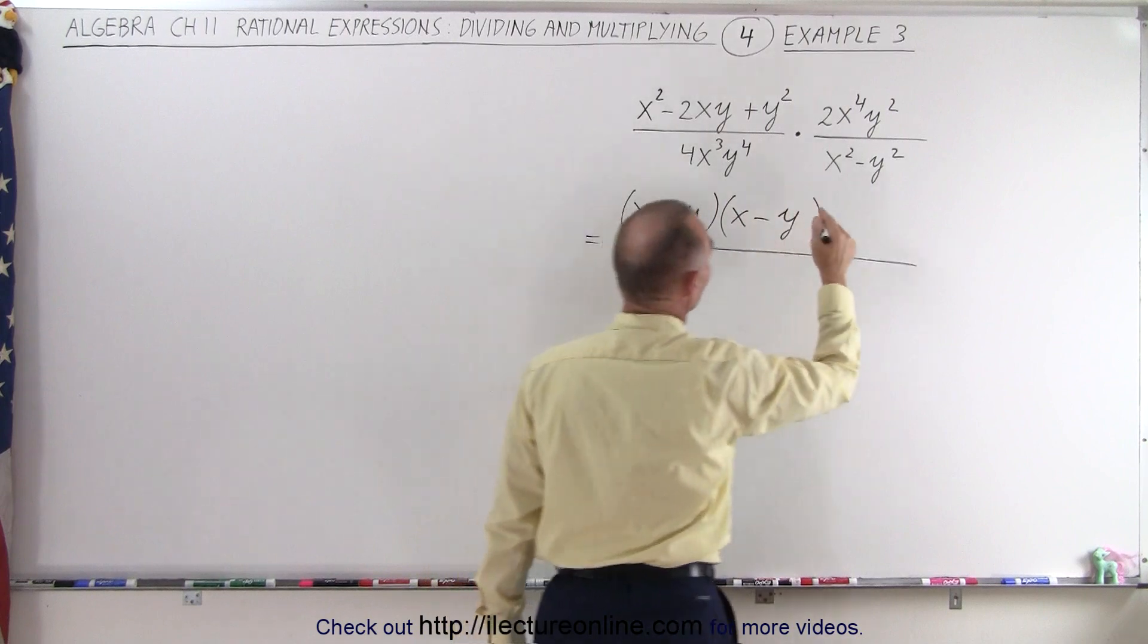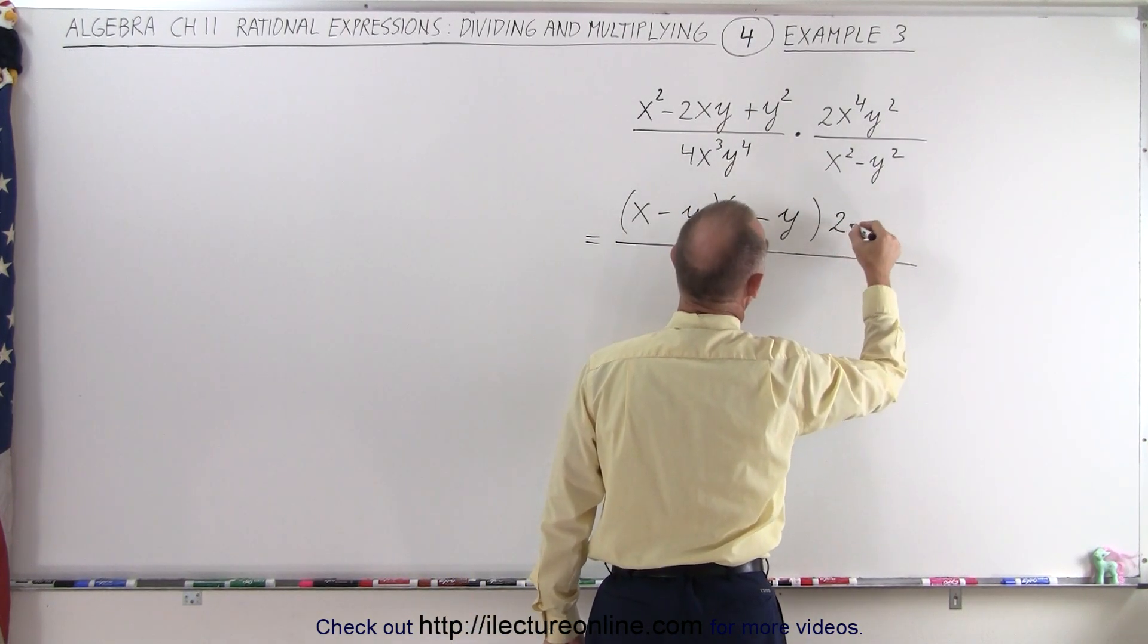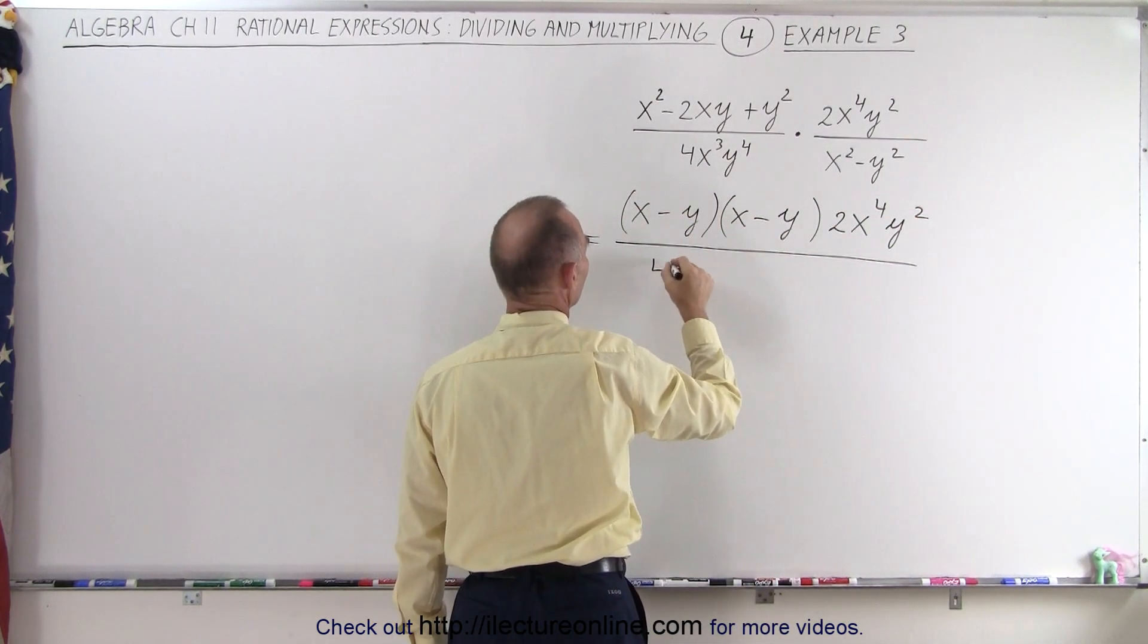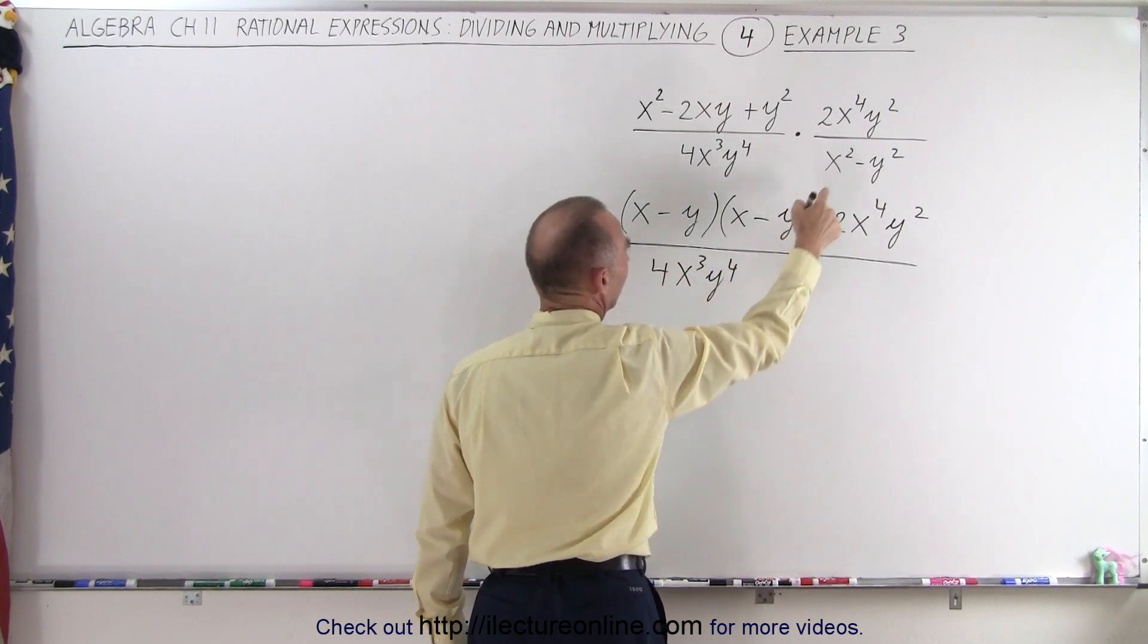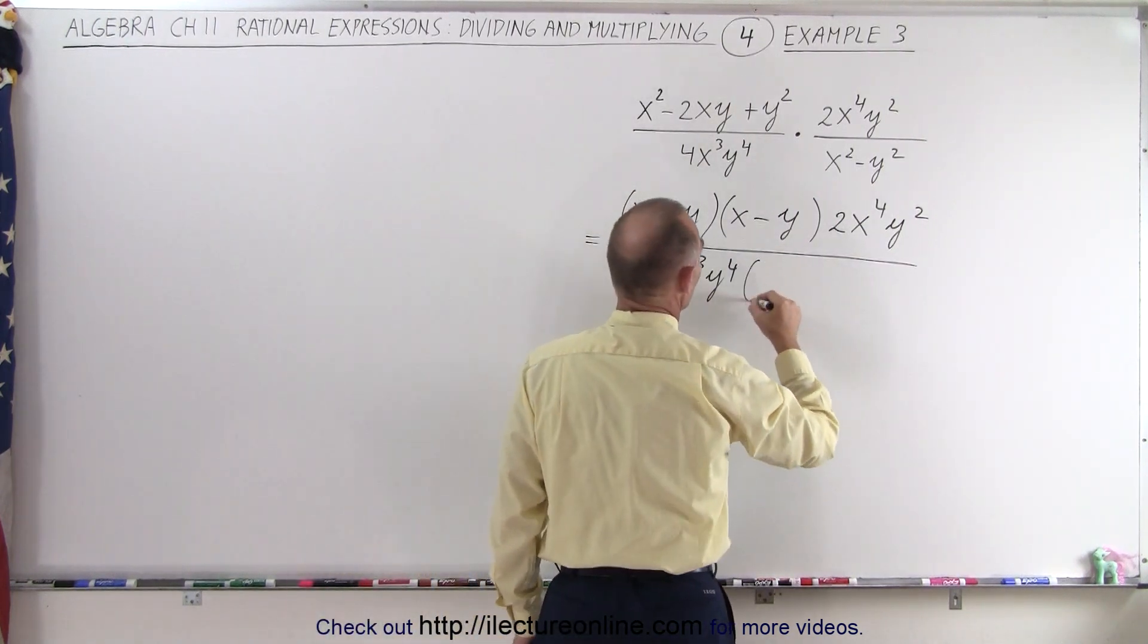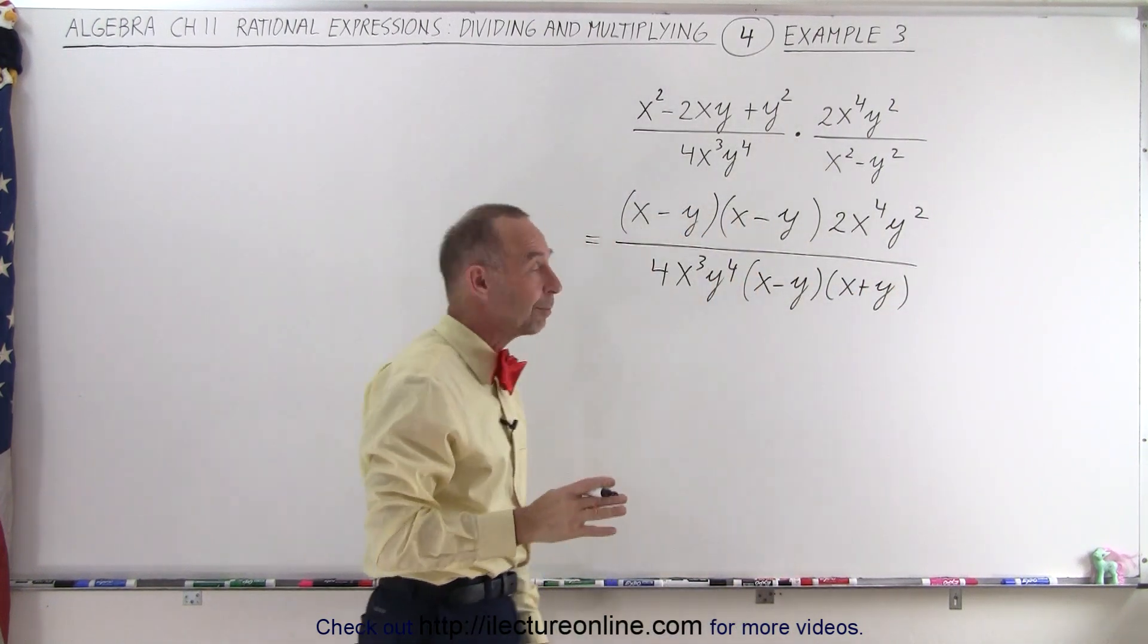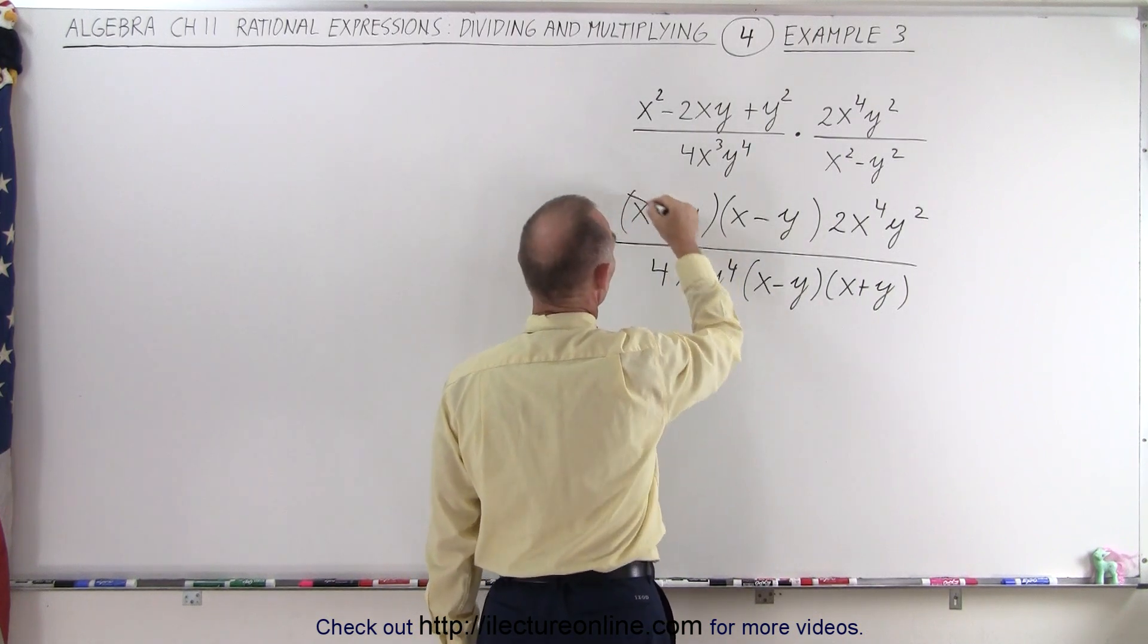And then we still have the quantity, we don't have to put parentheses around this, so we can write 2x to the fourth y squared. In the denominator, this cannot be factored, so we write 4x cubed y to the fourth. Now this can be factored because it's a difference of two squares, so this can be written as x minus y times x plus y. Now let's see what can be simplified.